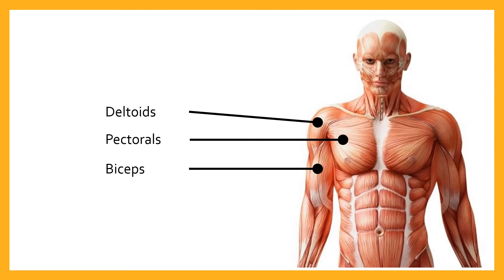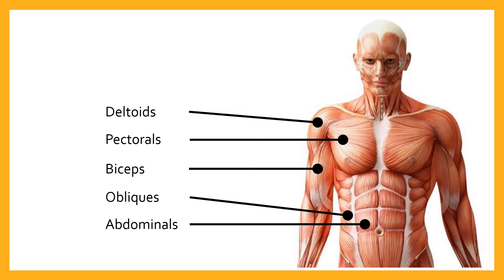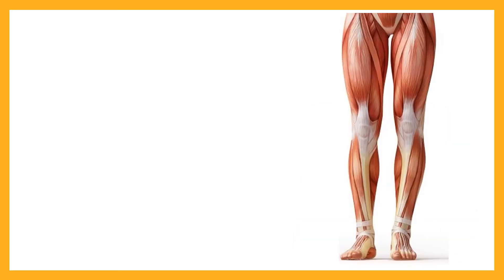The biceps brachii are at the front of the upper arm — the anterior of the upper arm on top of the humerus. Then we've got the obliques, which are part of the trunk to the side, and the abdominals down the centre of the trunk. Moving down the body, still looking at the front, we've got a group of muscles called hip flexors — muscles at the front of the top of the thigh that insert up into the pelvis and allow us to flex at the hip, closing the angle of the femur with regard to the pelvis.